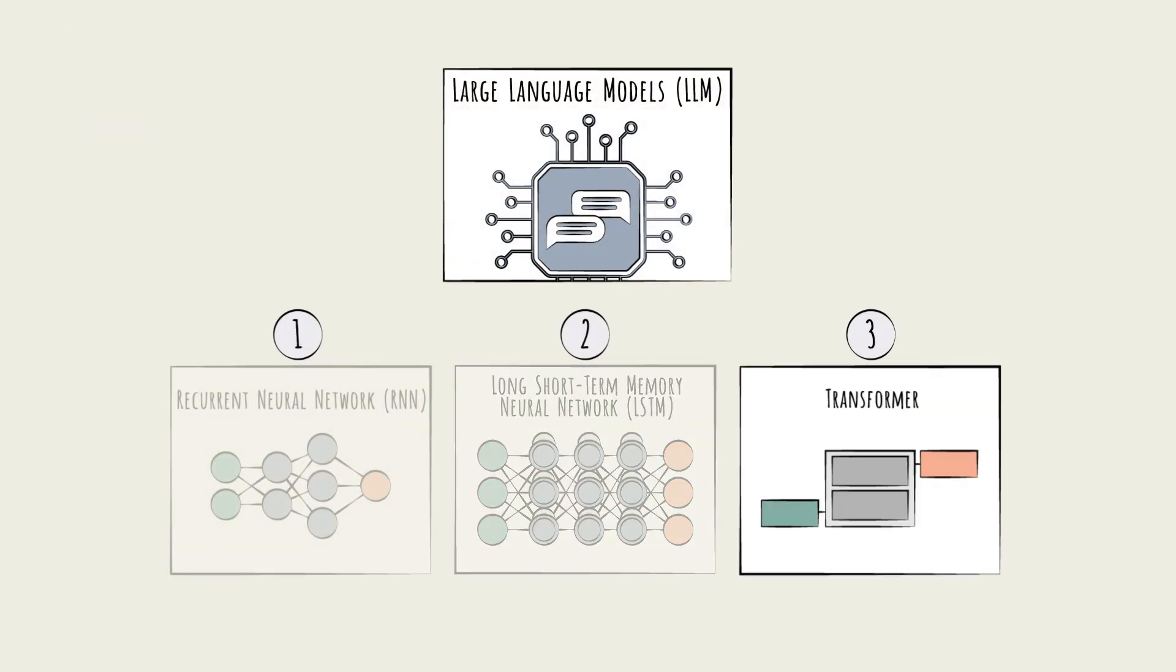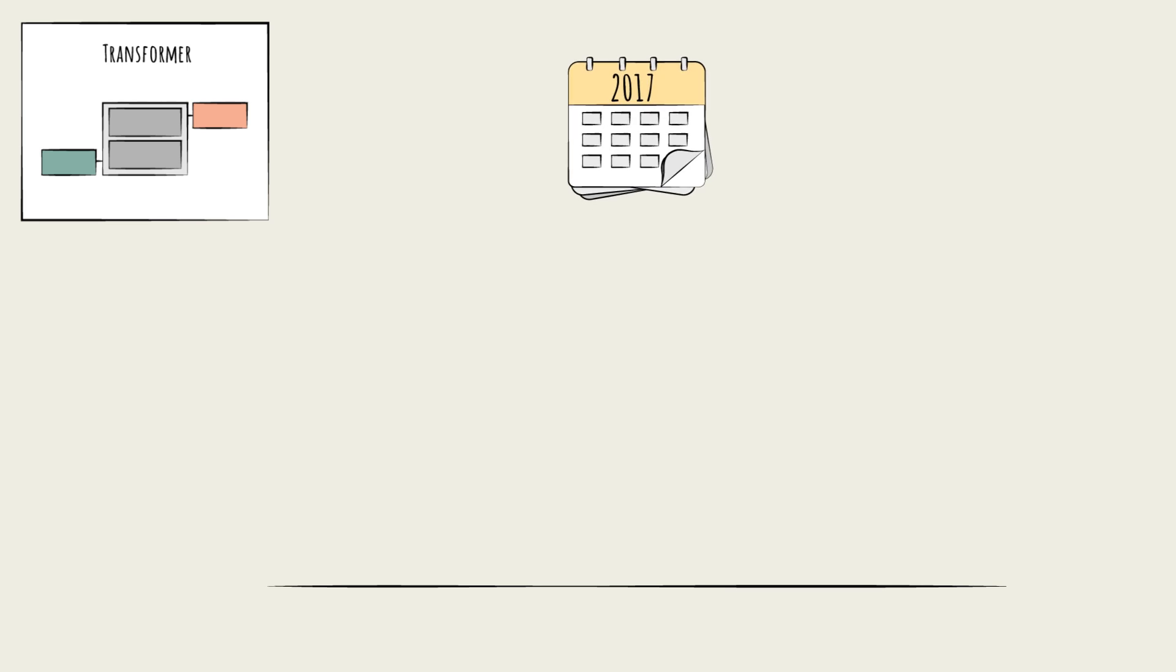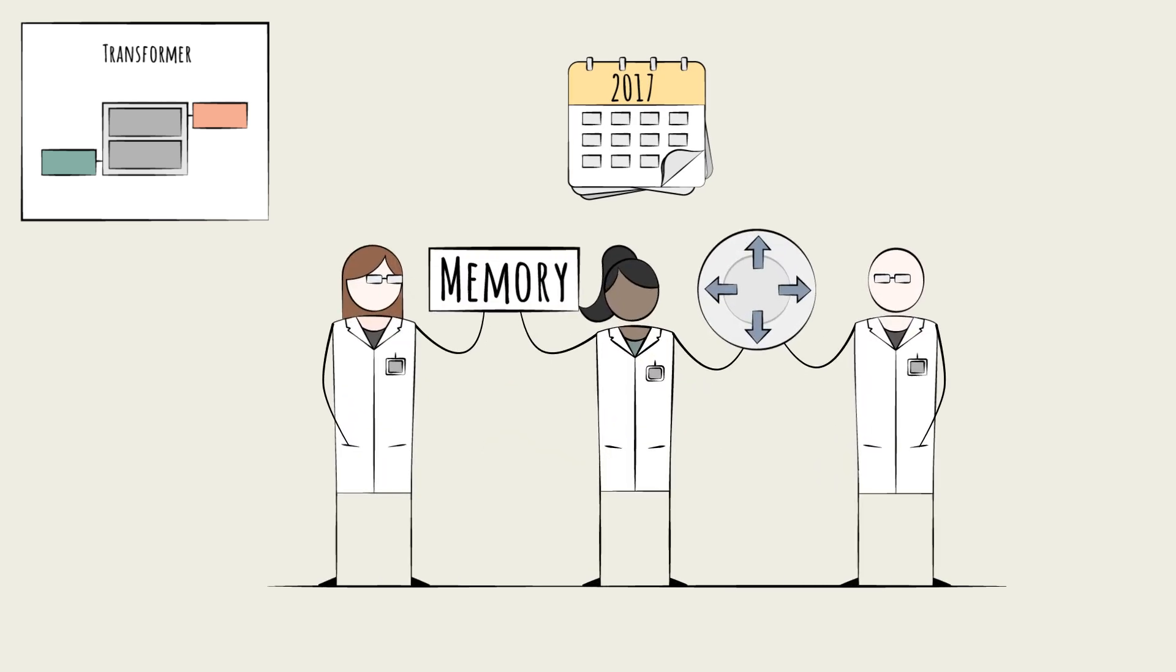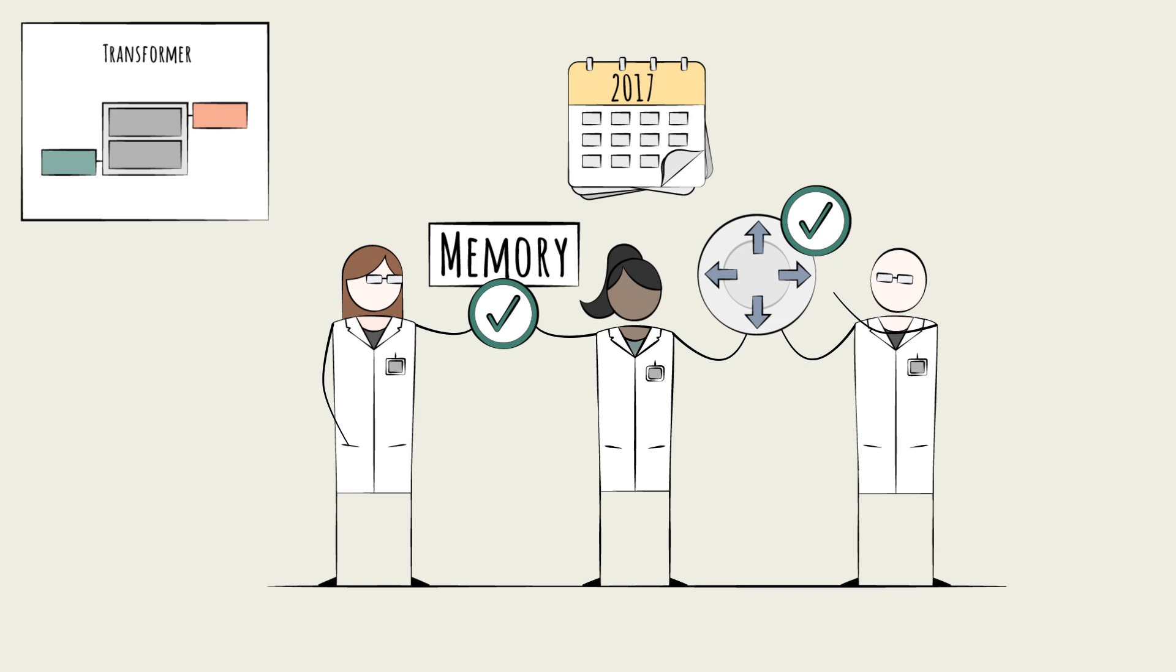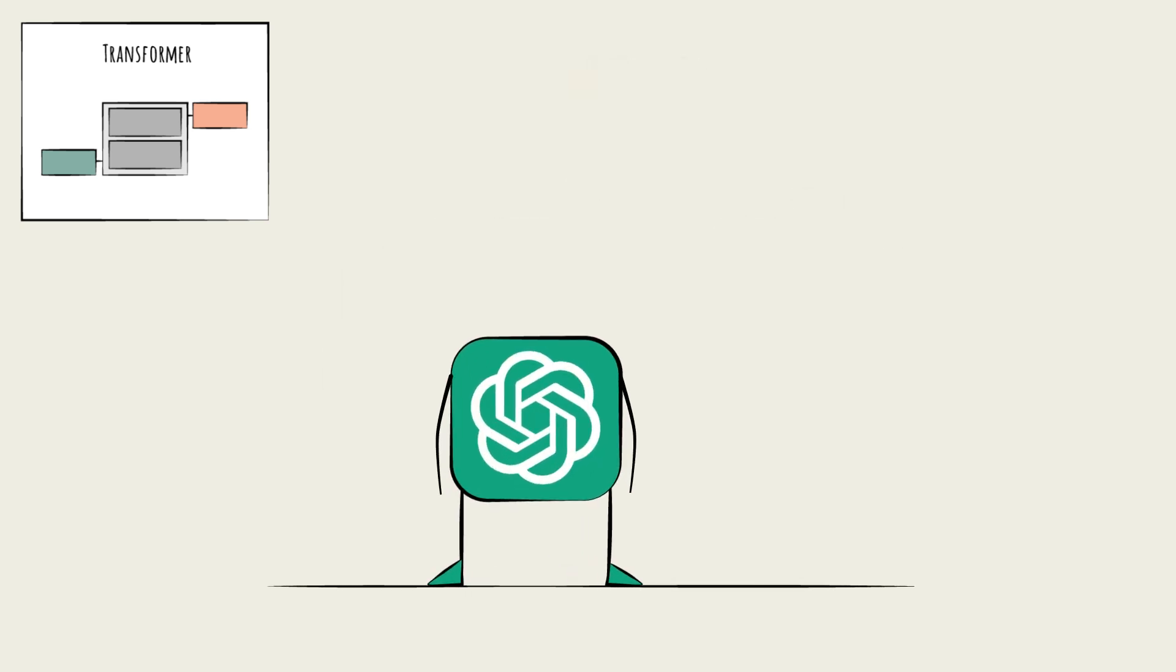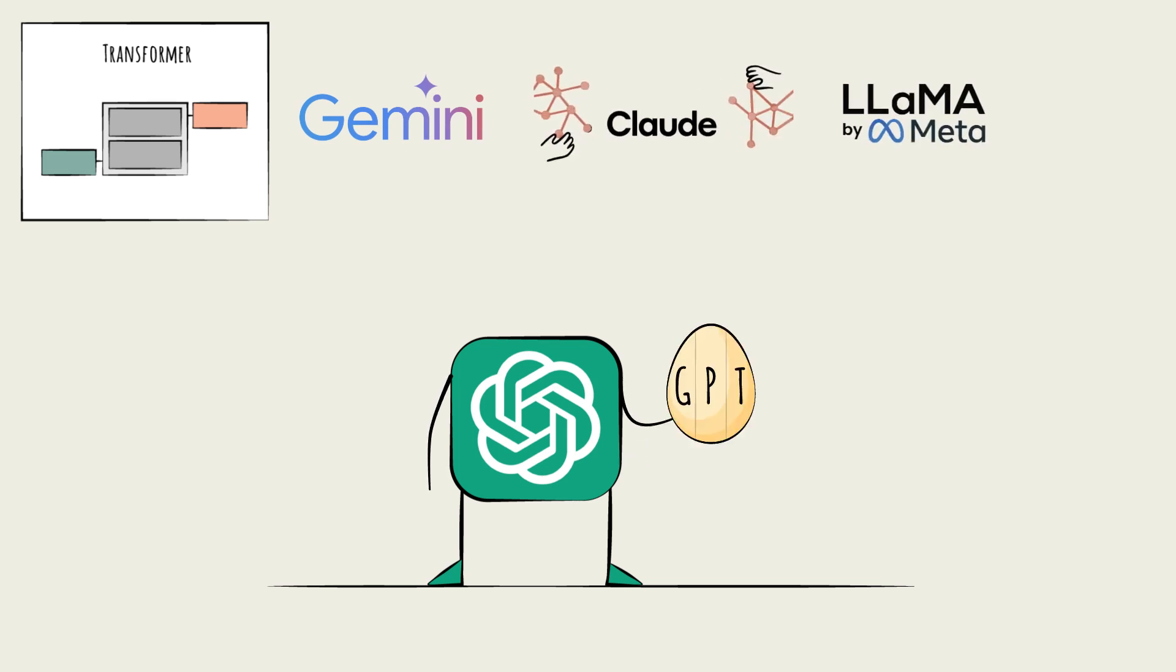The third type, the transformer, emerged in 2017 and was a real breakthrough. It solves both the memory and scalability challenges. In fact, transformers are used in nearly all modern LLMs, like Google's Gemini, Anthropic's Claude, and Meta's Llama. Transformer is the T in GPT.